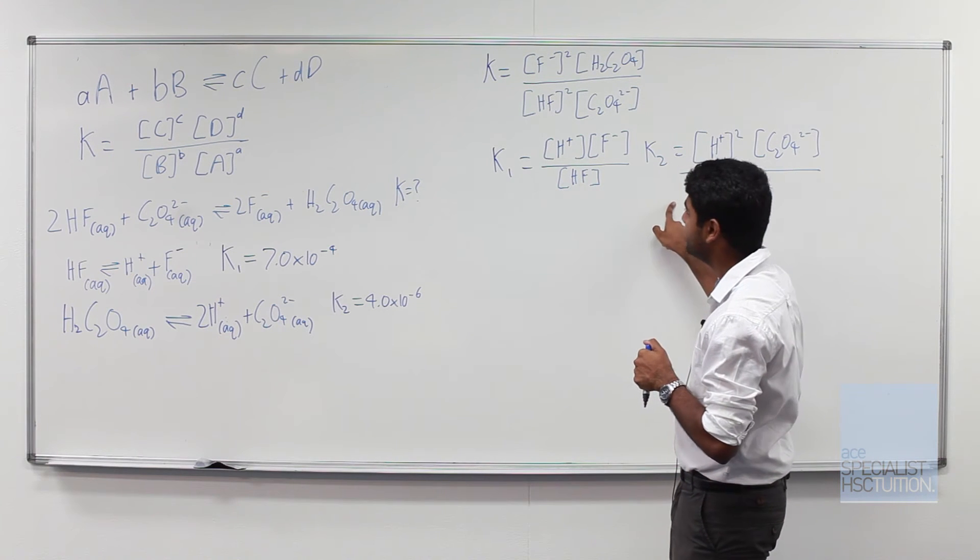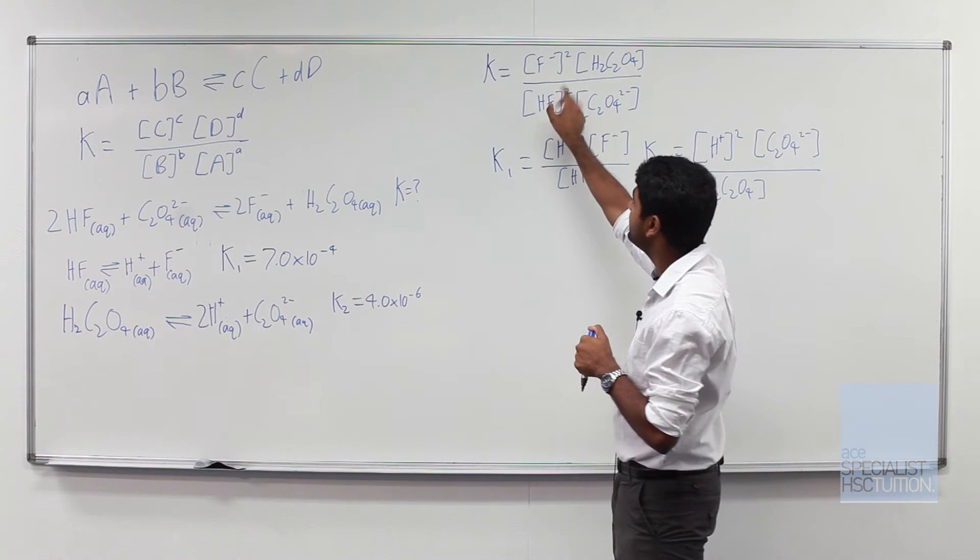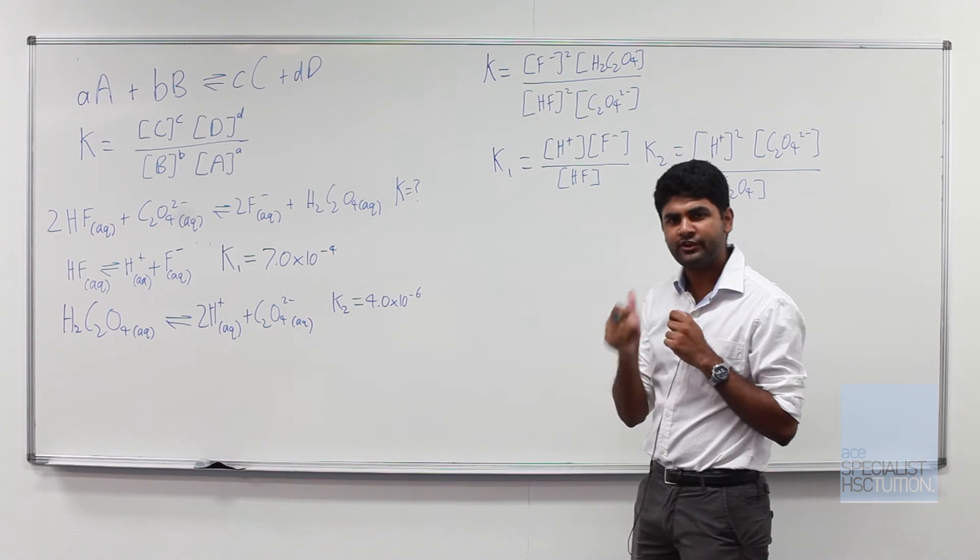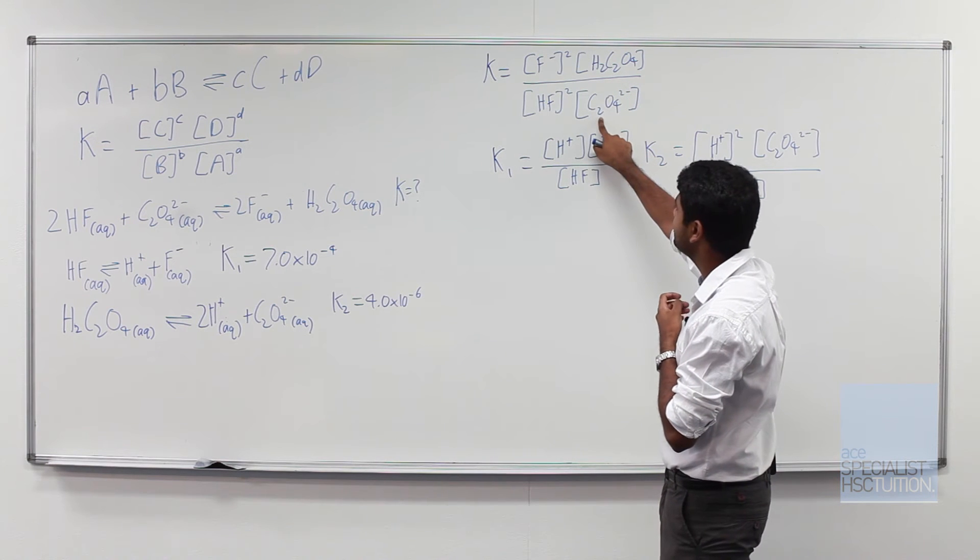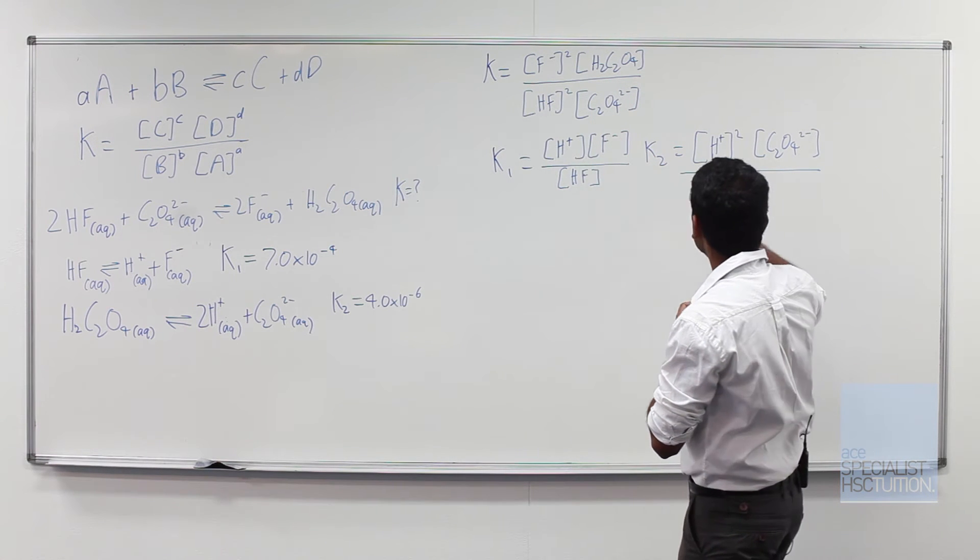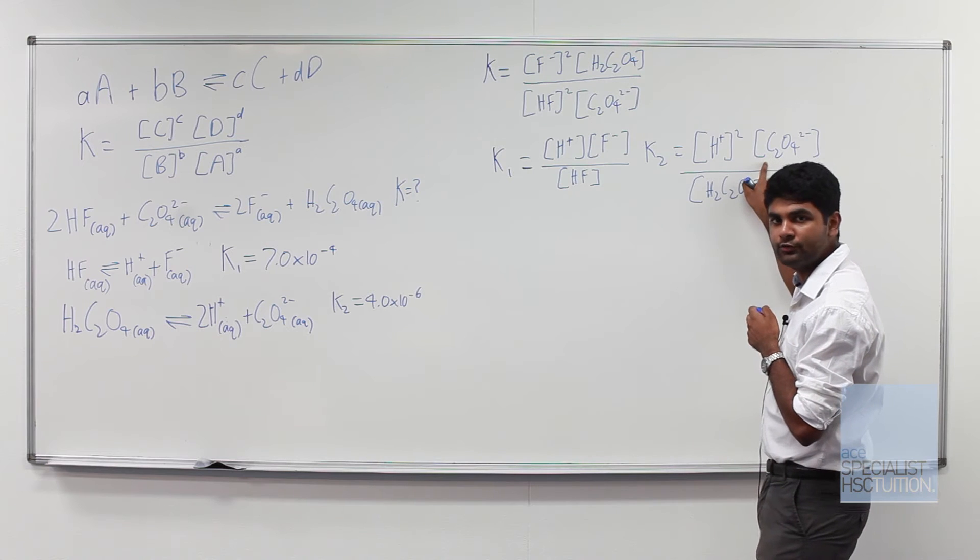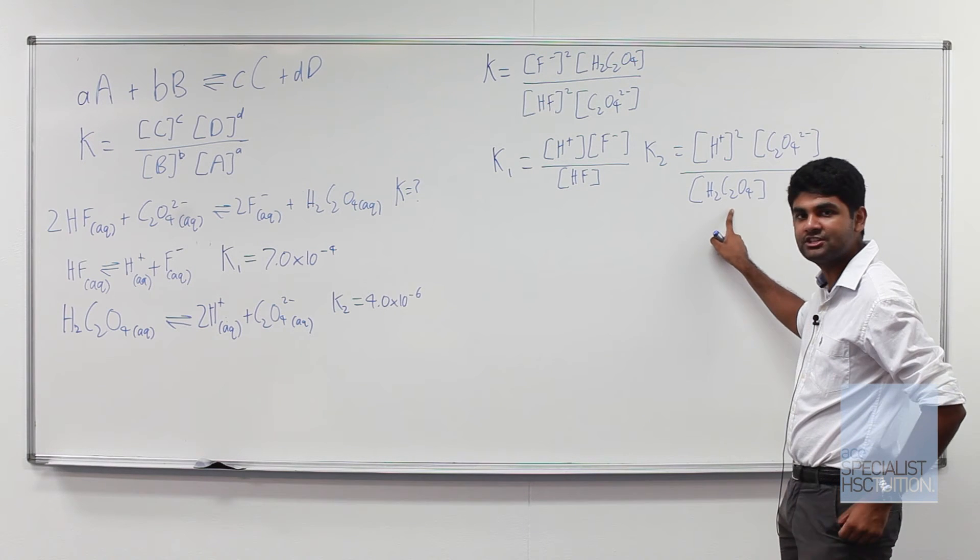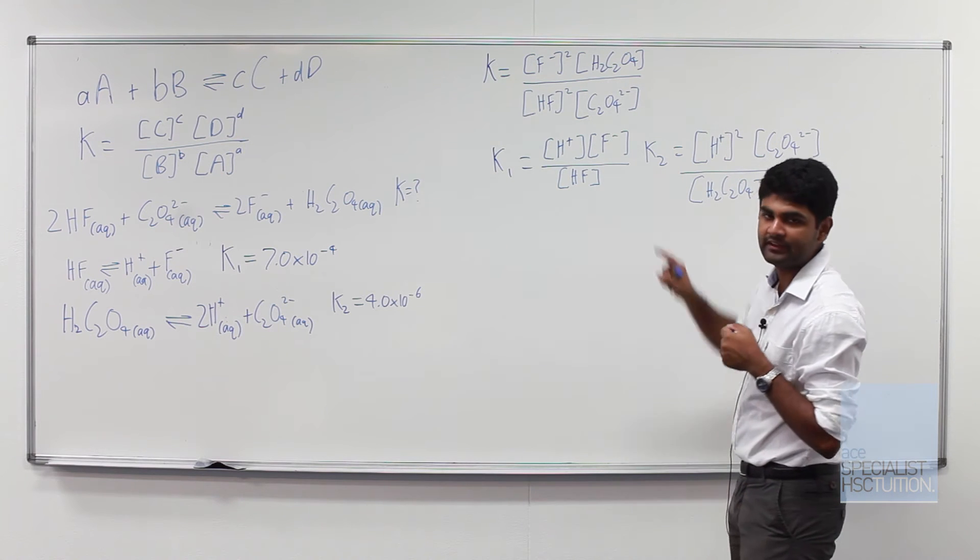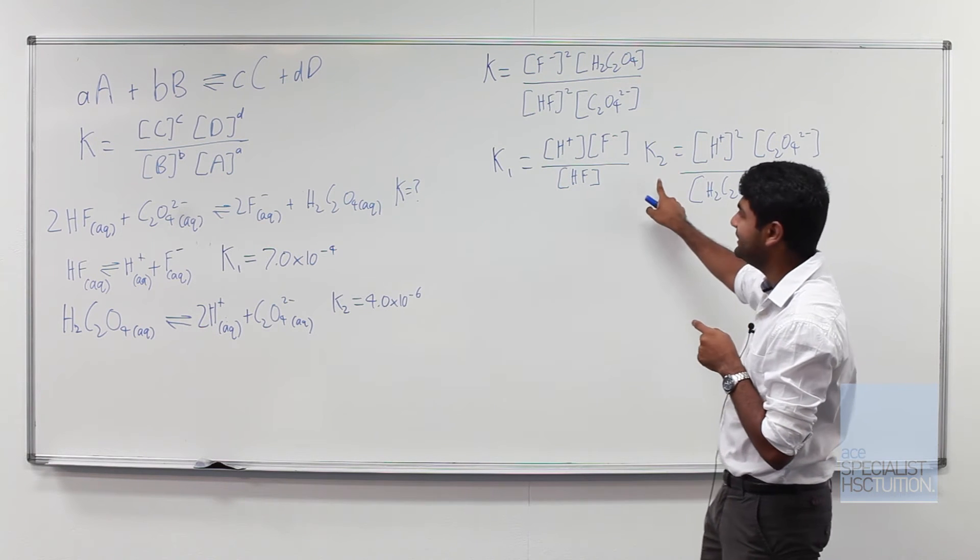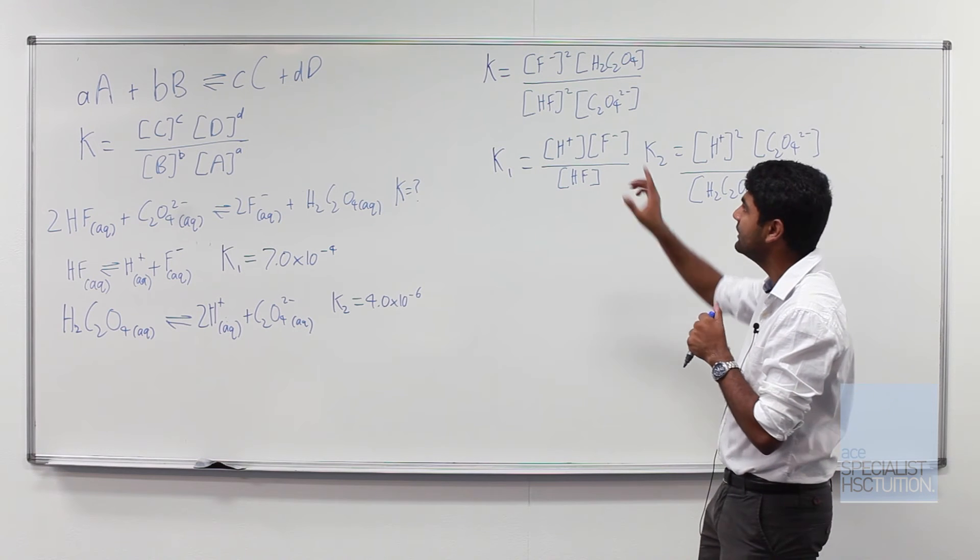We now need to have a look at K1, K2 and see how they interact to give us K. So first thing we can see is there's a H2C2O4 here, there's a C2O4^2- here. There is also a C2O4^2- here and a H2C2O4 here. However these are an inverse of what they are there. So in other words we need to do an inverse of K2 to get K.